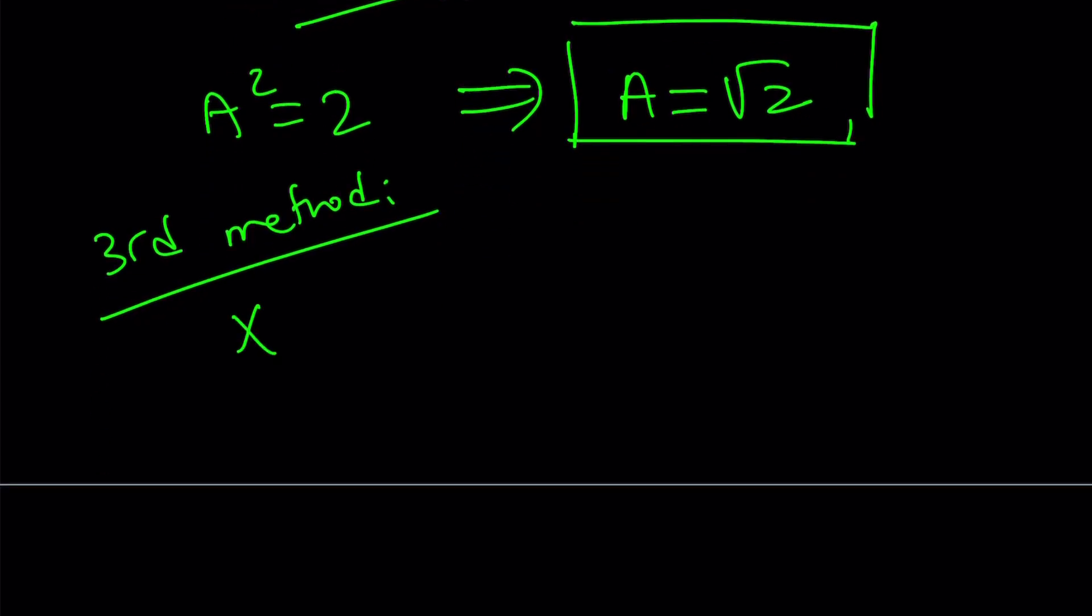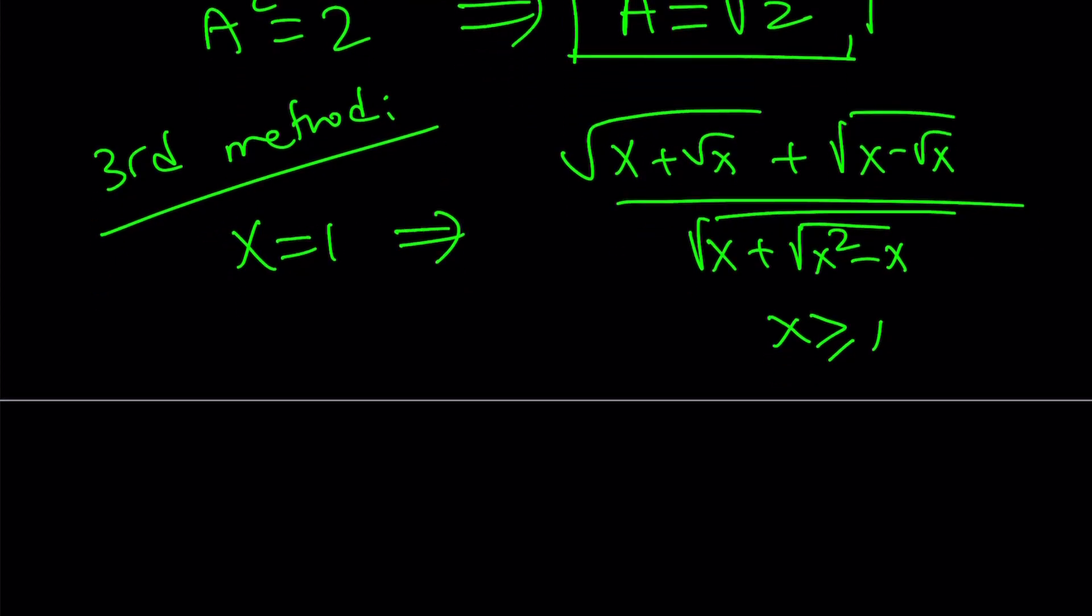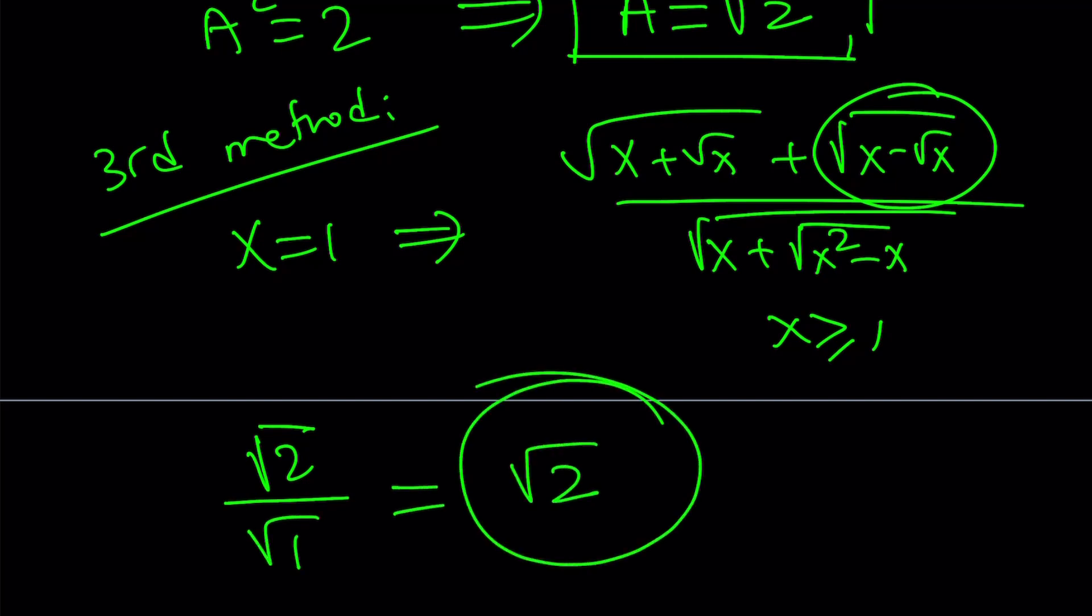Now, we're going to suppose x equals 1. Now, before that, maybe we should talk about the domain of this function. Notice that x needs to be greater than 0, but not only that, we also need that x minus square root of x greater than 0, so therefore, x greater or equal to 1 is going to work. So, if we set x equals 1 here in our expression, we're going to get square root of 1 plus 1, which is square root of 2, and this is going to become 0, and then we're going to divide it by square root of 1, and the answer is going to be square root of 2 as before.